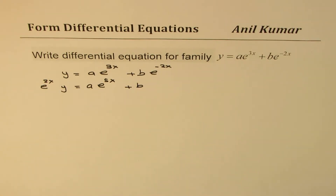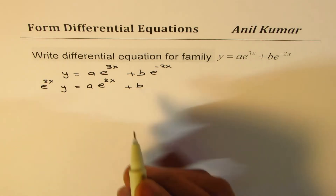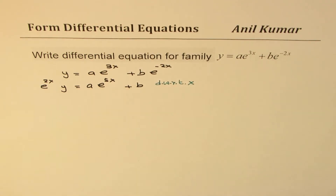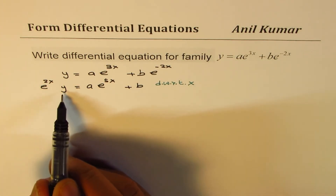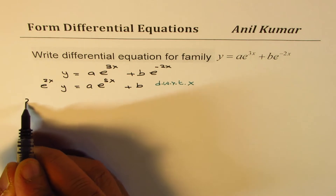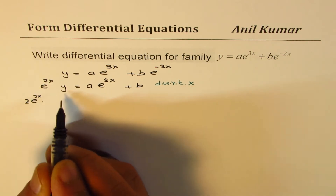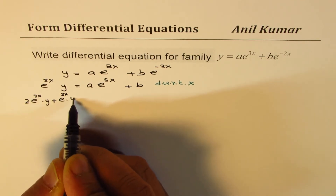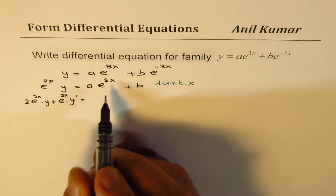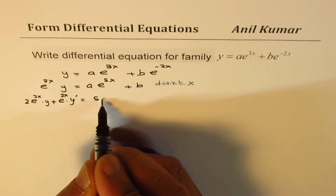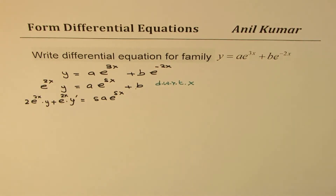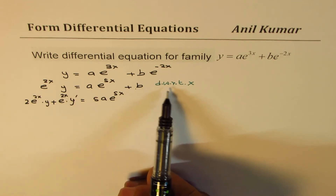Now if we differentiate with respect to x, we can eliminate b. Applying the product rule: derivative of the first term is 2e^(2x)·y, plus e^(2x)·y'. On the right side we get 5a·e^(5x) and the b term gives 0. So we have eliminated b with one derivative.